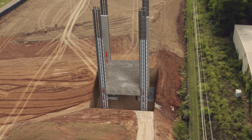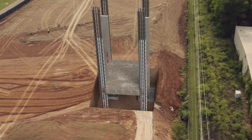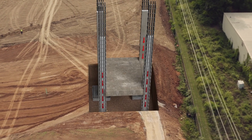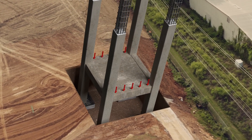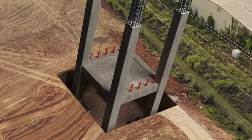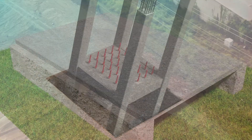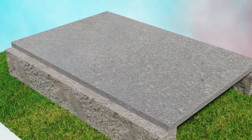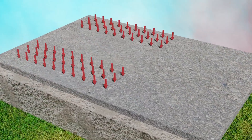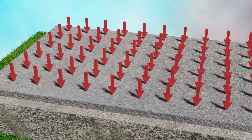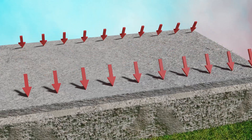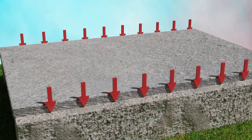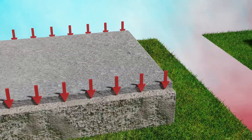In this video series we will learn how to design all these structural elements of an RCC building. We start with one-way slab, where area load is transferred only along the longer length of the beam.